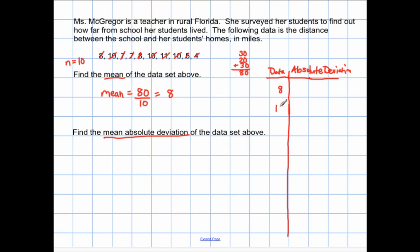Eight, ten, seven, seven, eight, ten, eleven, ten, and then five, and four. And again, make sure I have ten pieces of data. One, two, three, four, five, six, seven, eight, nine, ten. Okay, great.